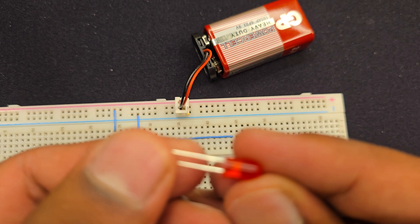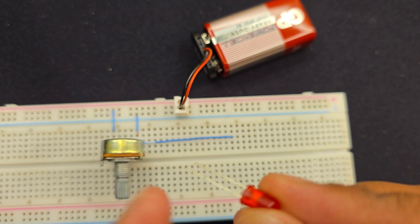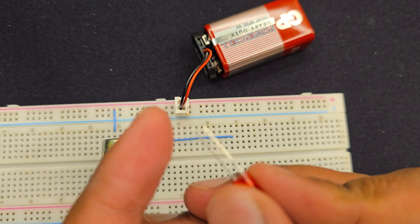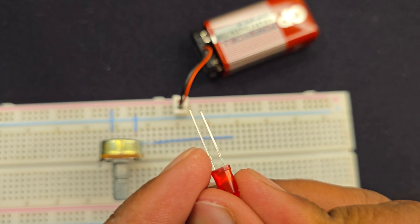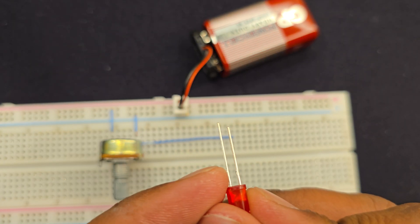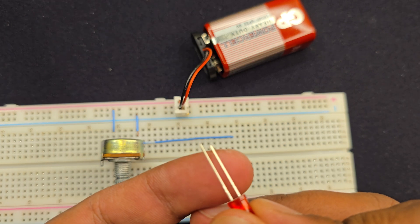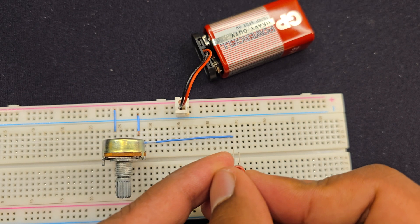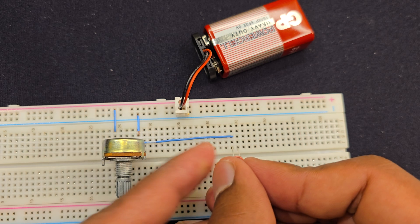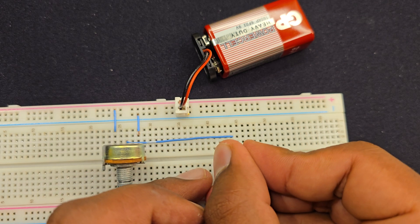Now I have this LED. This long pin, this long leg is the positive or anode of the LED, and the other small one is the negative. So I'm connecting this long leg to the output wire.